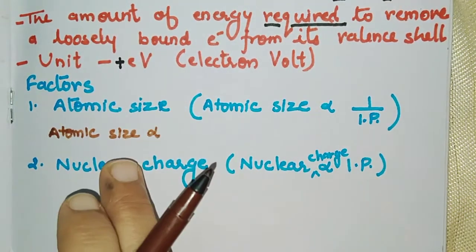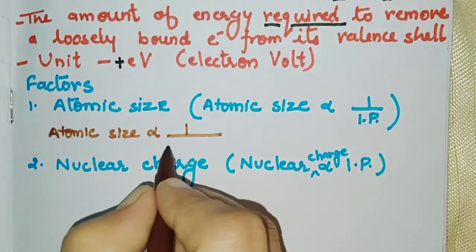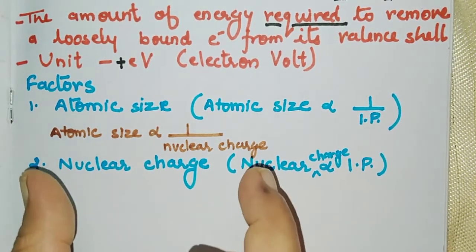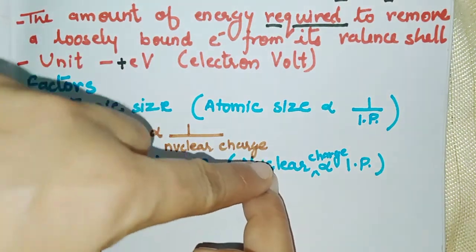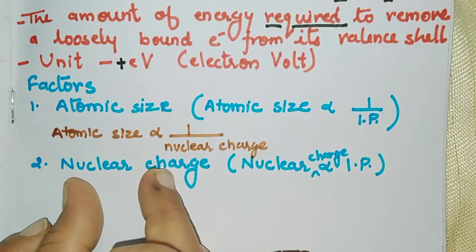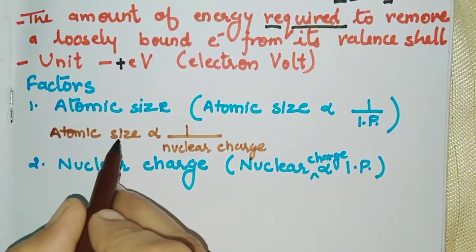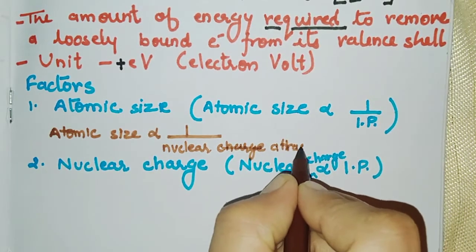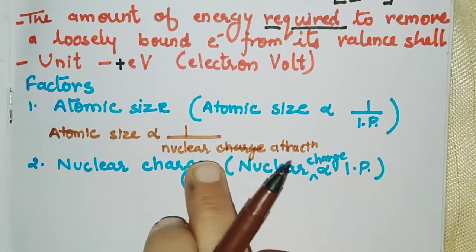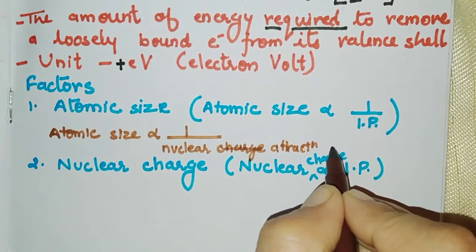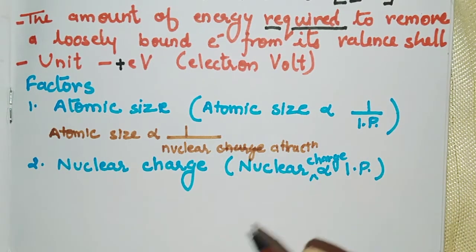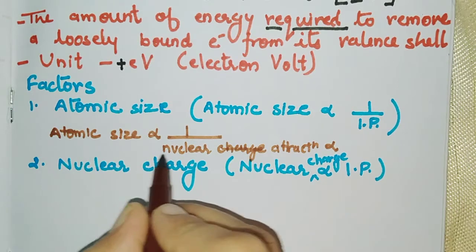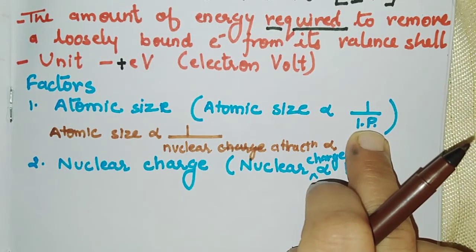Atomic size is inversely proportional to nuclear charge. If the atom's size is large, the attraction from the center is much less. If the atom is small, the attraction is more. So: more the atomic size, less the nuclear attraction — which means less energy is needed to remove the electron, so ionization potential decreases.